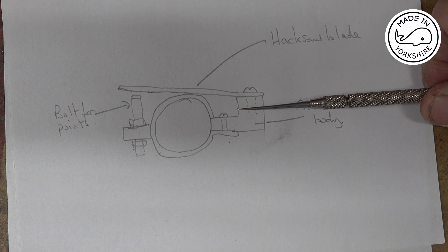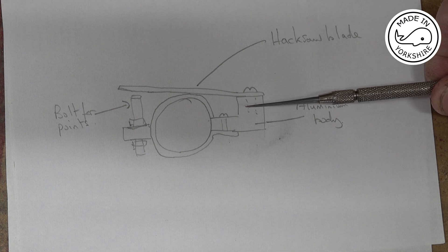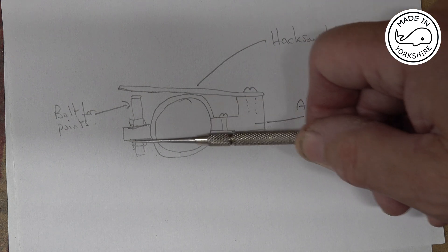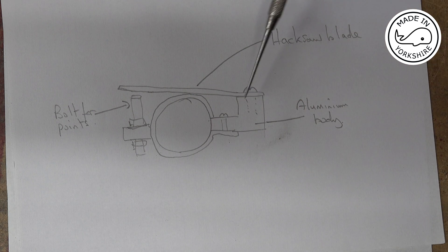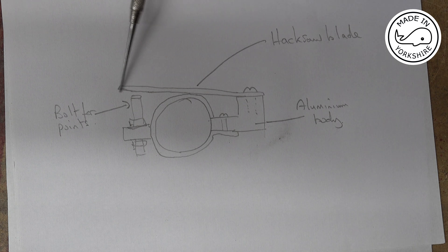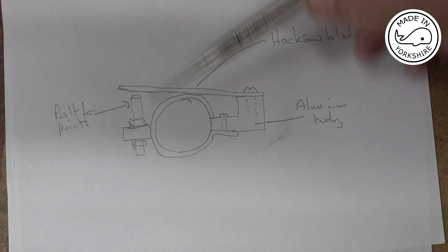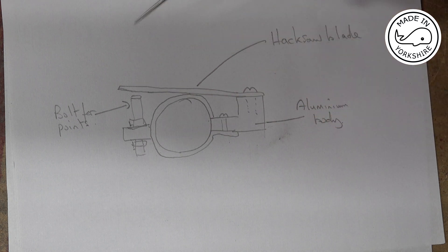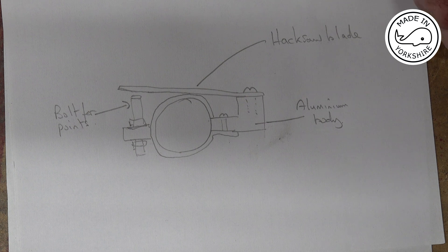So this is an extremely rough drawing of the points component. The body is made up out of a piece of aluminum. And up here you've got a hacksaw blade that acts as one part of the points, and here you've got a bolt which acts as the other part. So once they join obviously the circuit is made.